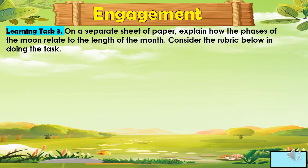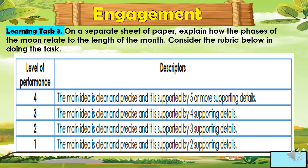For the engagement, Learning Task 3: on a separate sheet of paper, explain how the phases of the moon relate to the length of the month. Consider the rubric below. For the level of performance: you will get 4 points if the main idea is clear and precise and supported by 5 or more supporting details; 3 points if supported by 4 supporting details; 2 points if supported by 3 supporting details; and 1 point if supported by 2 supporting details.